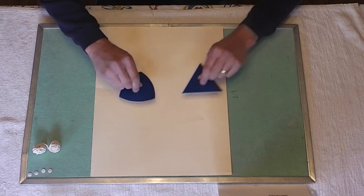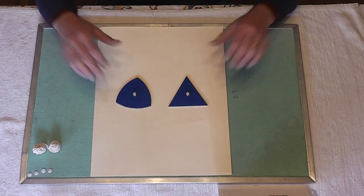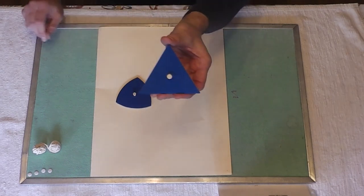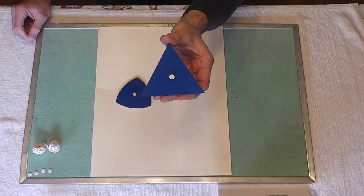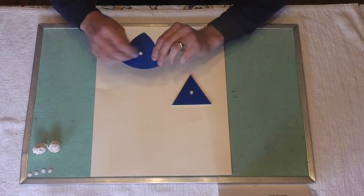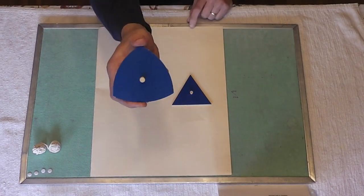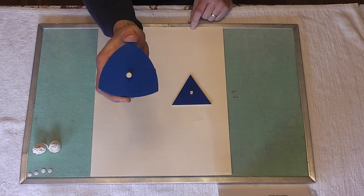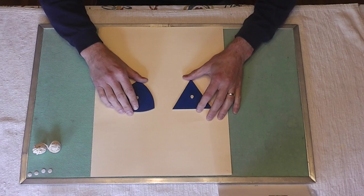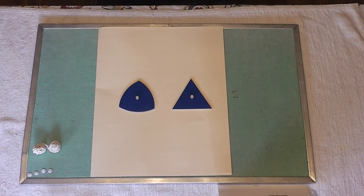I've brought out two shapes from the geometric cabinet. This first shape is a triangle, in fact an equilateral triangle. And this shape is a curvilinear triangle. If you look at each shape, you can see they are a little bit different. They do have some similarities, but there's also some differences.